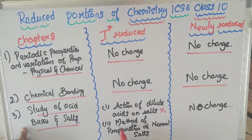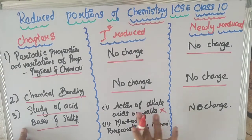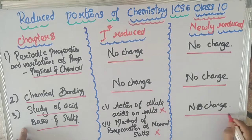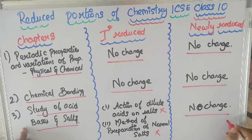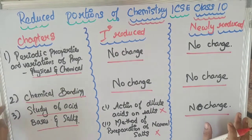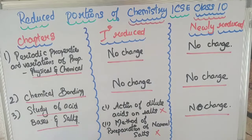In the third chapter, Study of Acids, Bases and Salts, during the first reduction two topics were completely removed: action of dilute acids on salts, and method of preparation of normal salts. In the new reduction there is no further change.